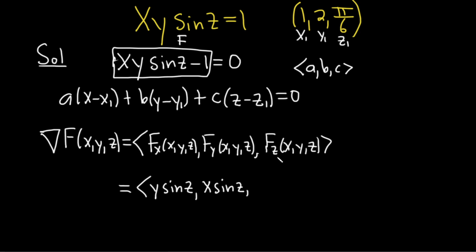And then fz, again, everything is constant except the z. So this time we're taking the derivative of sine z, which is cosine z, and the x, y hangs out. So we have x, y, cosine z.